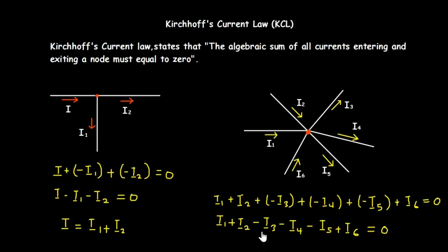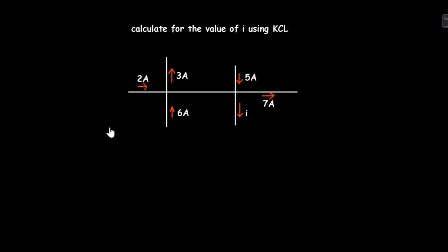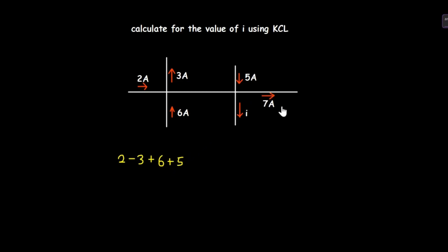Let's try some examples to understand this law better. We have some current moving towards the node and some moving away. The 2 amperes are moving towards the node, so that's positive 2. The 3 amperes are moving away, so that's minus 3. The 6 amperes are moving towards the node, so plus 6. The 5 amperes are also moving towards the node, so plus 5. The 7 amperes are moving away, so minus 7. And current i is also moving away, so minus i. All this equals zero.